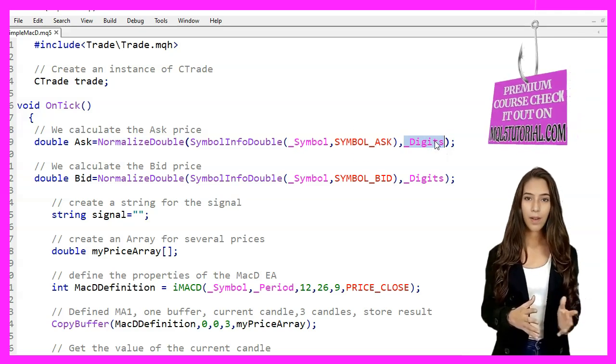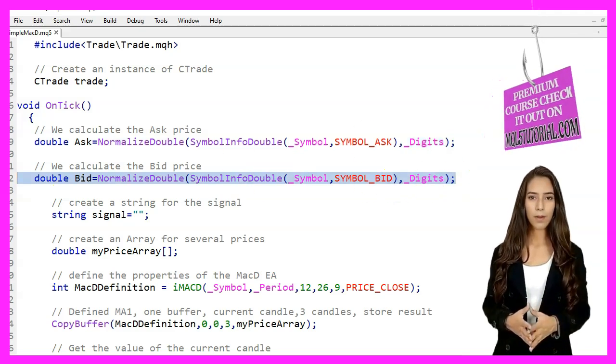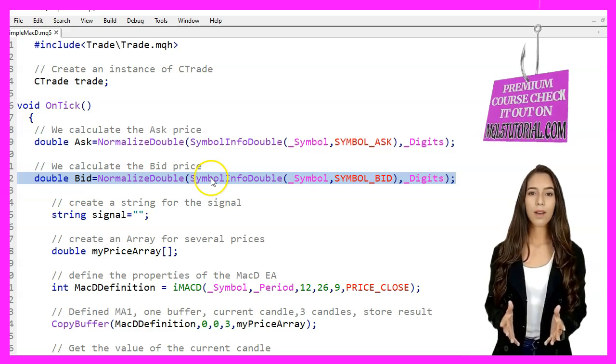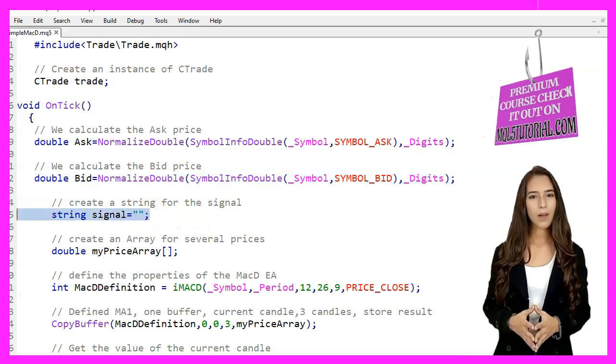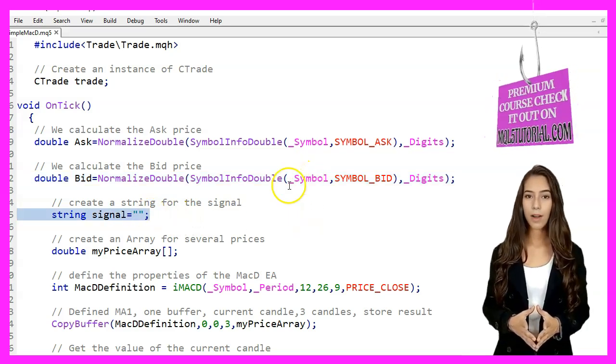Similarly, we calculate the bid price using SymbolInfoDouble and NormalizeDouble to get the current bid price for the symbol. We then create a string variable named Signal to store our trading signal.